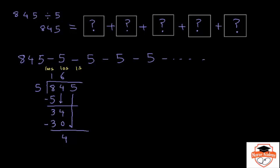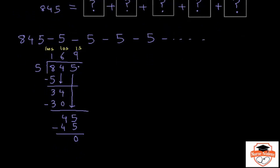Then bring the 5 down from the ones place — we are left with 45. Now the question is how many 5s will fit into 45? 5 times 9 is 45, so we could fit 9 fives into 45. And 45 minus 45 is 0. So although we broke down 845 into pieces, we ended up dividing all of it by 5 and the answer is 169. So we can say 845 divided by 5 is 169.